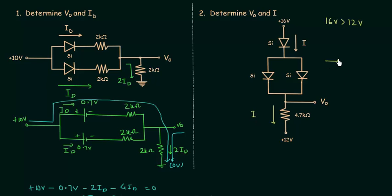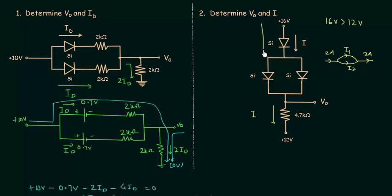To understand the current flow: if we have a situation where current is equal to 2A, then the current here is also equal to 2A because I1 plus I2 equals 2A. I will calculate I first, then we will calculate V0. Starting from 16V and moving towards 12V, we will consider the equivalent model of all 3 diodes. They are silicon diodes, so the barrier potential is equal to 0.7V.